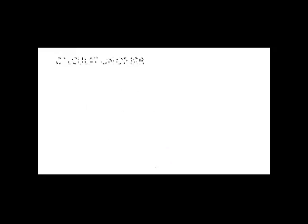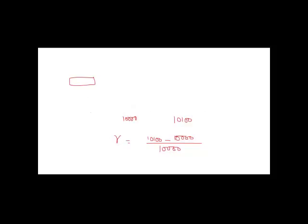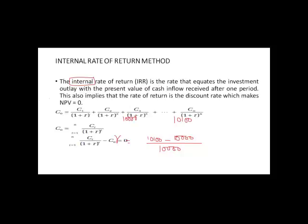For the calculation of IRR, one important thing is what internal rate of return means in terms of investment decision. It is the rate of return where your NPV value will be equivalent to zero. In the NPV formula, you have the term Ct divided by (1 + R) to the power T, minus C0. When the difference of these two values comes to zero, that is NPV = 0, and that rate is the internal rate of return.